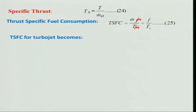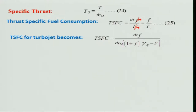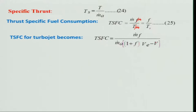This is also true for automobiles — there is an optimal speed range for minimum fuel consumption. Going slower or faster than that range both incur a fuel penalty. The question also arises: where should we evaluate TSFC? Should it be at static condition or at the design flight condition?